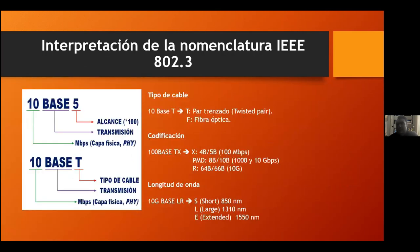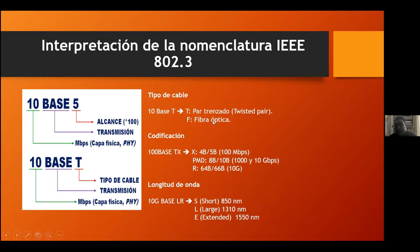¿Cómo podemos entender el estándar de Ethernet, el 802.3? Regularmente el primer símbolo nos va a decir la velocidad a la cual se va a transmitir. 'Base' es que se está transmitiendo en banda base. Y el '5', que es de los primeros modelos del Ethernet, son 500 metros en cable coaxial. Posteriormente encontramos una T, que es que la transmisión es en par trenzado, que todos ocupamos para conectar nuestras redes de datos. O si es F, es que se está transmitiendo por fibra óptica.